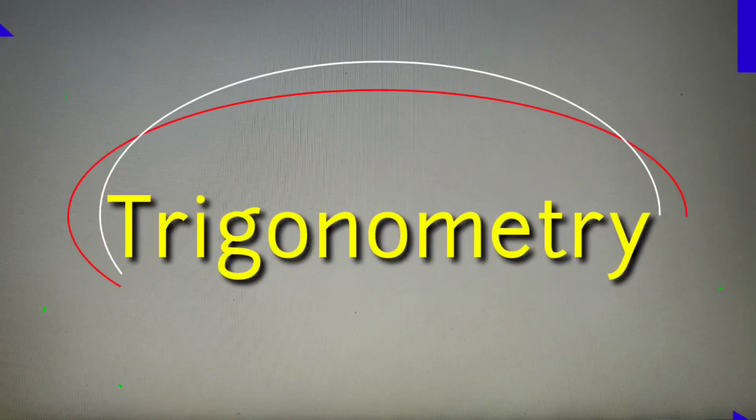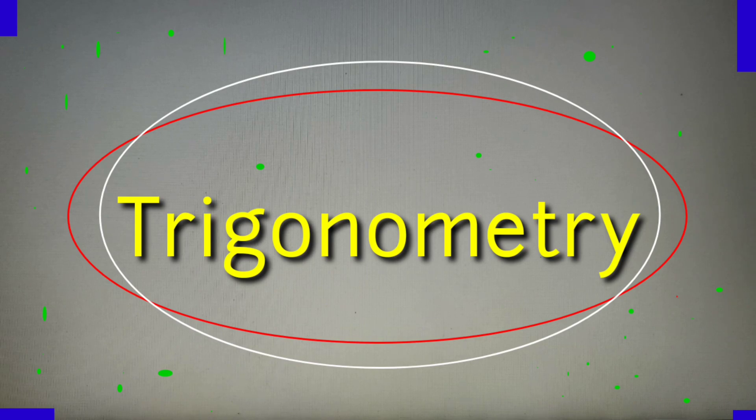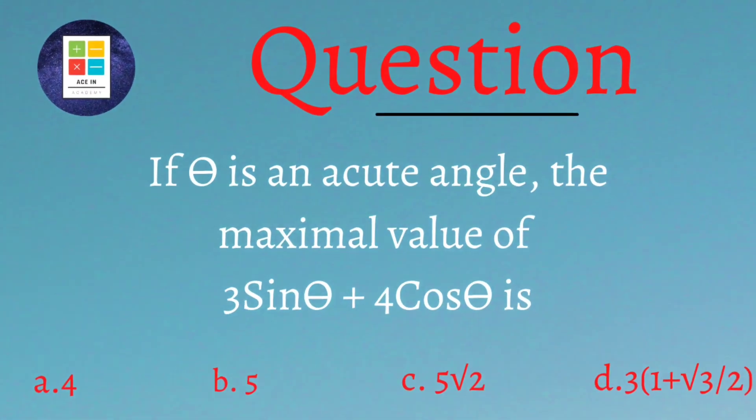As you can see from the title of this video, we'll solve another question on the topic of trigonometry and differentiation. The question has appeared in the BMath Honours admission test 2010. The question is: if theta is an acute angle, the maximum value of 3 sin theta plus 4 cos theta is...